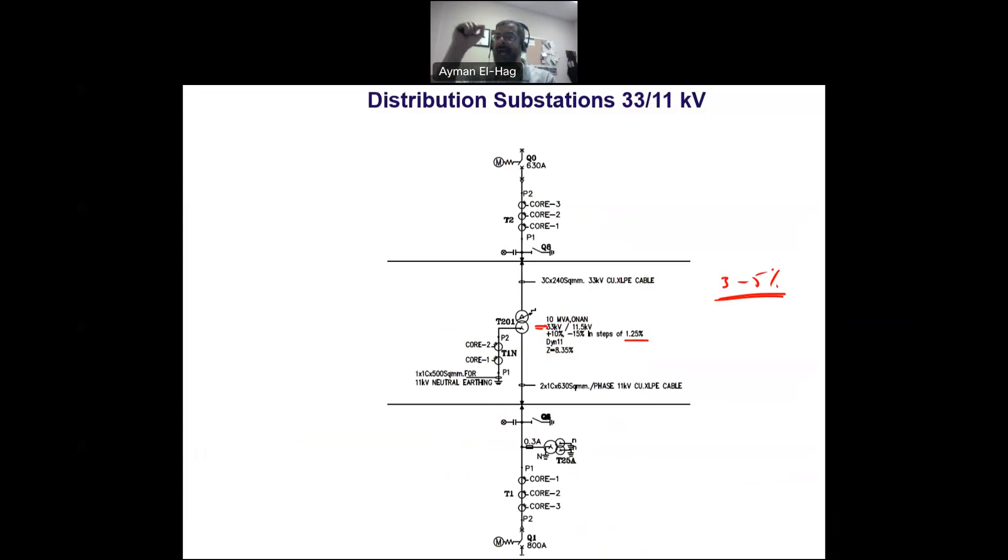We want to maintain the voltage within certain tolerance. Usually, the voltage has to be maintained around 3% to 5% at the 11 kilovolt side. To maintain this, I have to control the voltage whenever there is any change in the load using the tap changer. By increasing or reducing the number of turns, I can increase the voltage up to 10% or reduce it up to 15%, and each step is 1.25% of the rated voltage. This is done using an online or on-load tap changer.